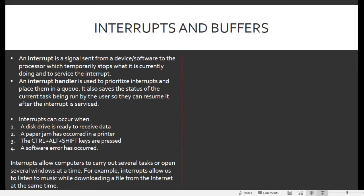An interrupt is a signal sent from a device or software to the processor which temporarily stops what it is currently doing in order to service the interrupt. An interrupt handler is used to prioritize interrupts and place them in a queue. It also saves the status of the current task being run by the user so they can resume it after the interrupt has been serviced.